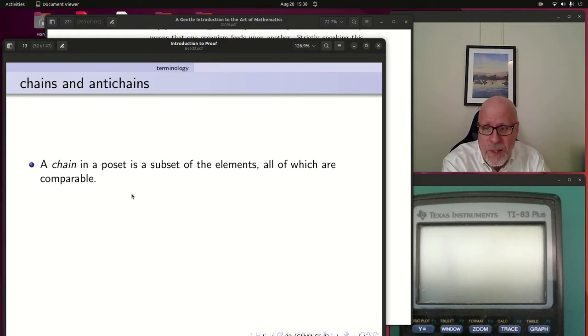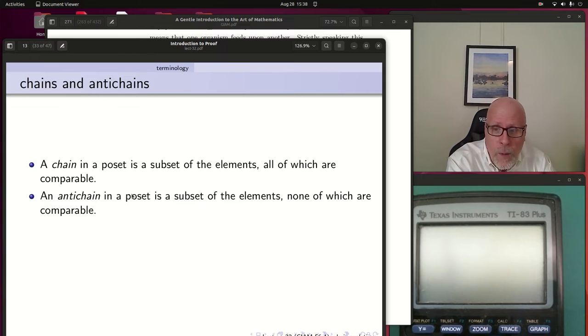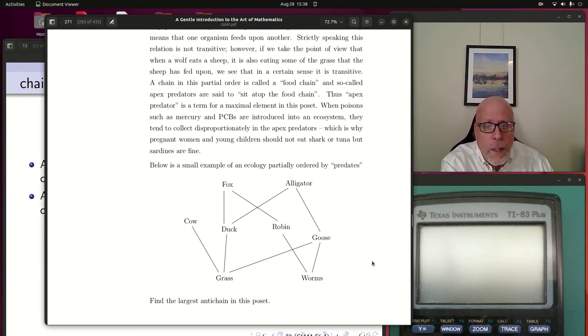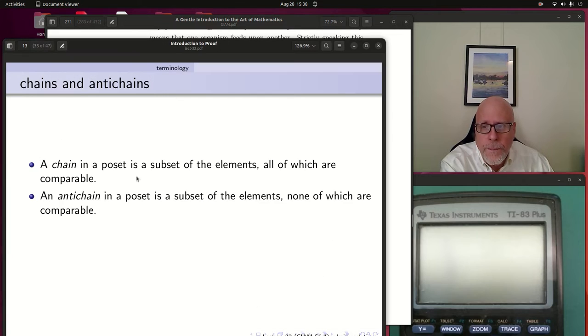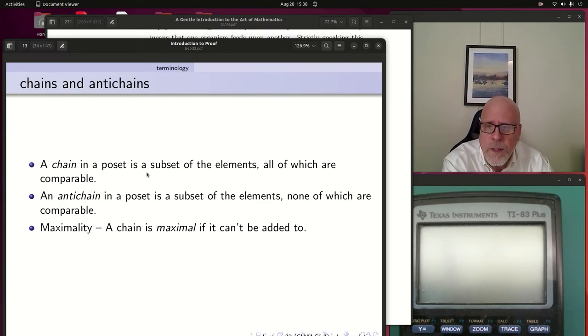Even just a pair of things that are related would be a chain. Usually we're looking for sort of bigger chains. We like to get chains as big as possible. What about anti-chains? This is the idea of a pile of things that can't be compared. Back to this example, how about cow, duck, robin, goose? All of those guys form an anti-chain.